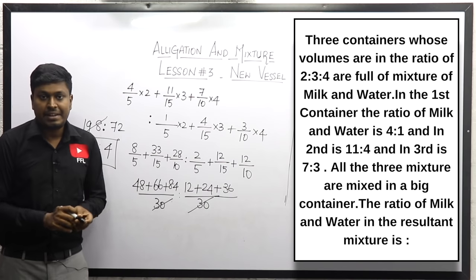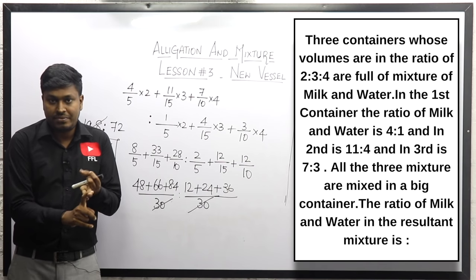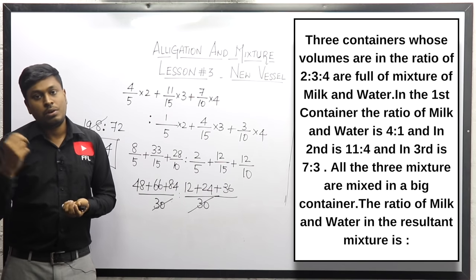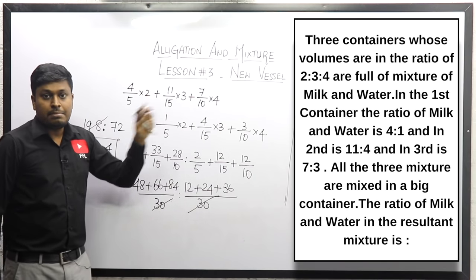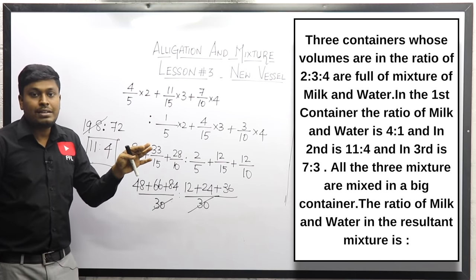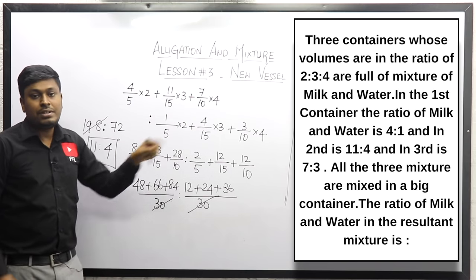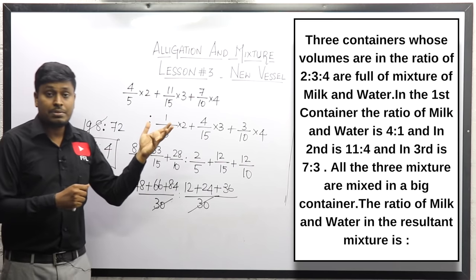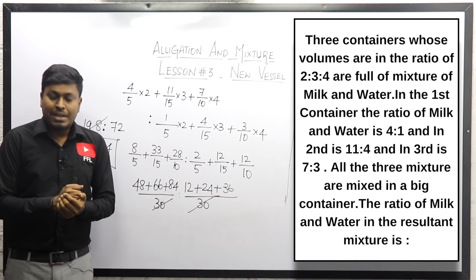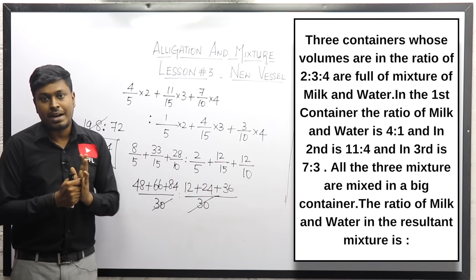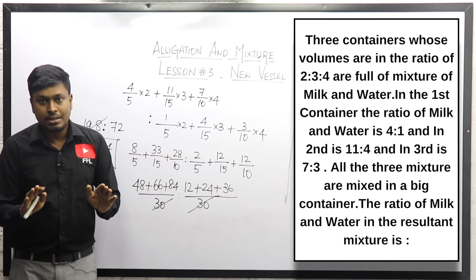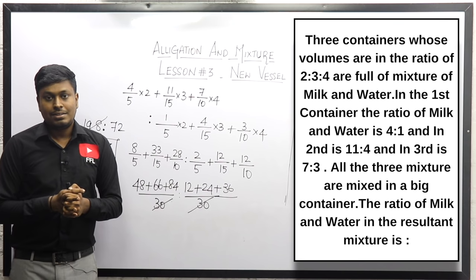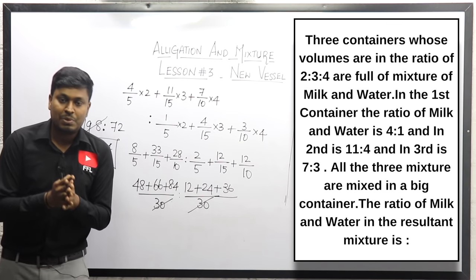In lesson number three on Allegation and Mixture, we solved four questions. The first two questions had equal-volume glasses so no multiplication was needed. Questions three and four had different-volume containers, so we multiplied by 3, 4, 5 and 2, 3, 4 respectively. All other steps remain the same. Do not learn the lengthy formula — just know how to write the fraction values correctly and you can solve any question of this type. Thank you for watching!